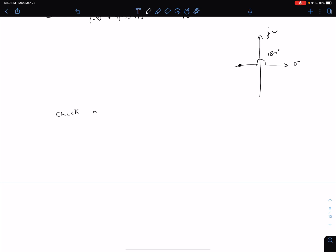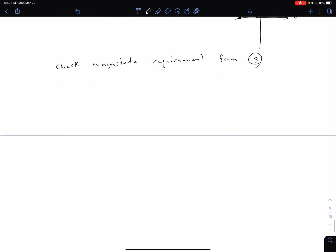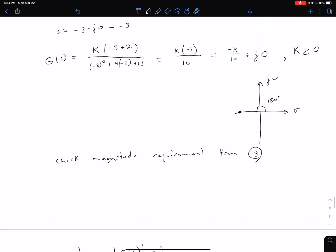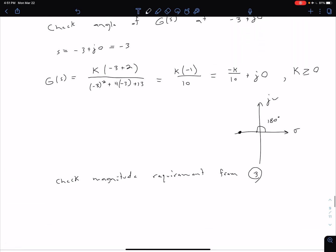What we want is |G(s)| = 1. We can get the magnitude from this expression if we think back to our math review video.